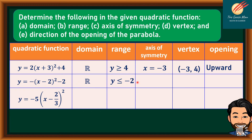The axis of symmetry is x = 2, which is the additive inverse of −2. The vertex is (2, −2) — take the additive inverse of −2, which gives positive 2, and we have −2 for k. And of course, it opens downward.